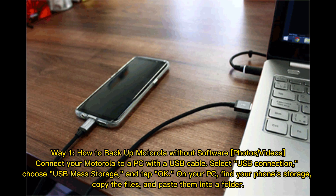Way 1: How to backup Motorola without software — photos and videos. Connect your Motorola to a PC with a USB cable. Select USB connection, choose USB mass storage, and tap OK on your PC. Find your phone storage, copy the files, and paste them into a folder.